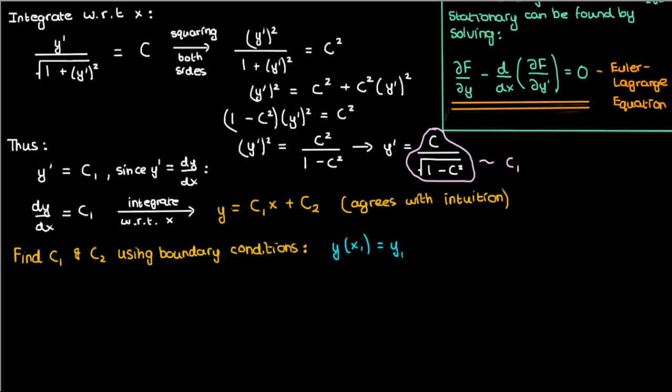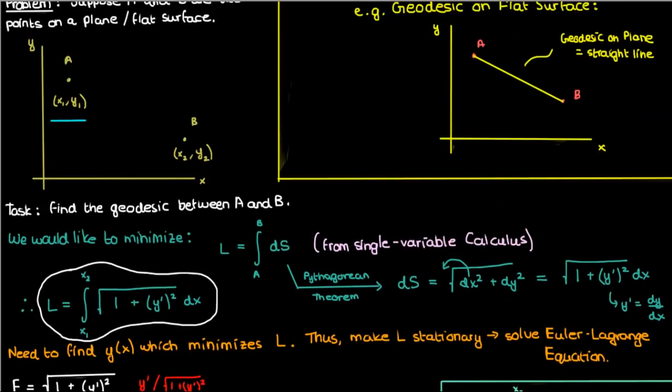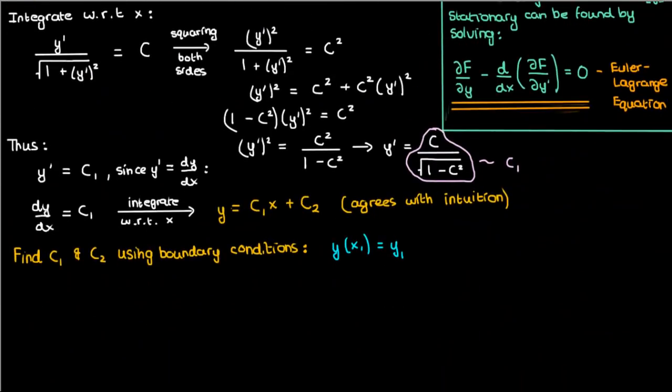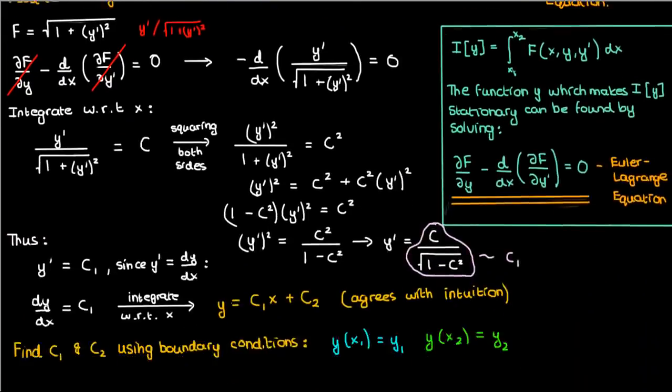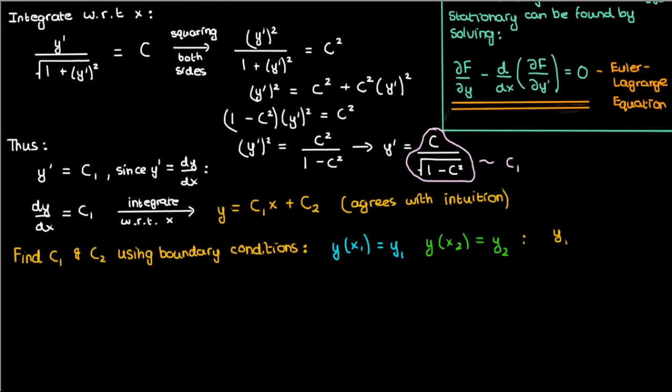At x1 we know that y is just y1, which is point A, and at x2 we know that y is just y2, which represents point B. So let's plug that in to get two equations for c1 and c2. It's pretty easy to solve these equations using substitution or elimination to determine the unknown c1 and c2.